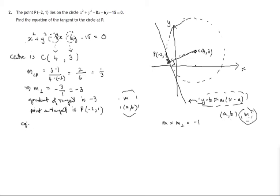So the equation of the tangent is, then this is what we're using, y minus b equals mx minus a. So it's y minus b, that's the y coordinate of the point on the tangent, y minus 1, equals m, that's the gradient, negative 3, times x minus a. And the x coordinate is negative 2.